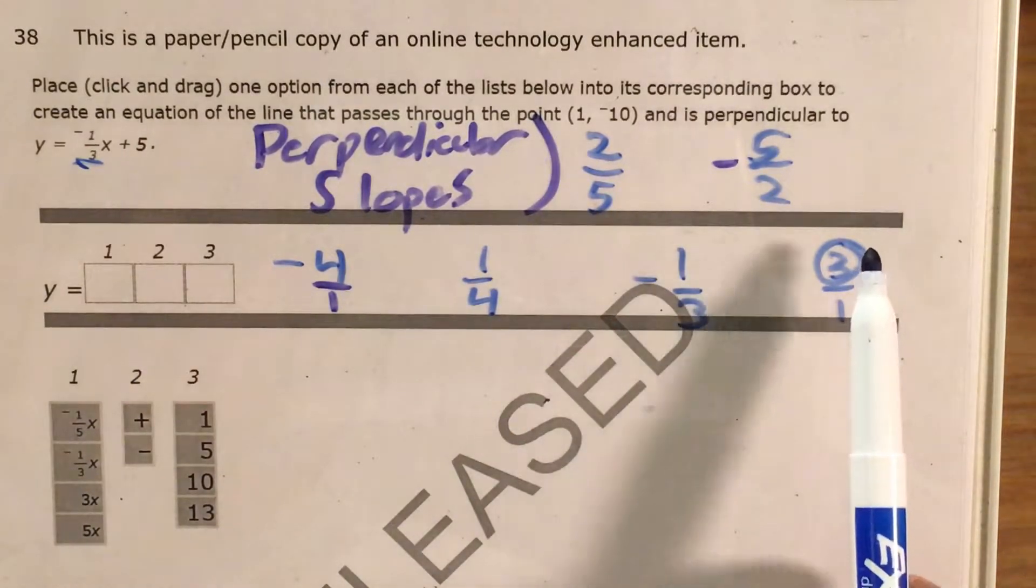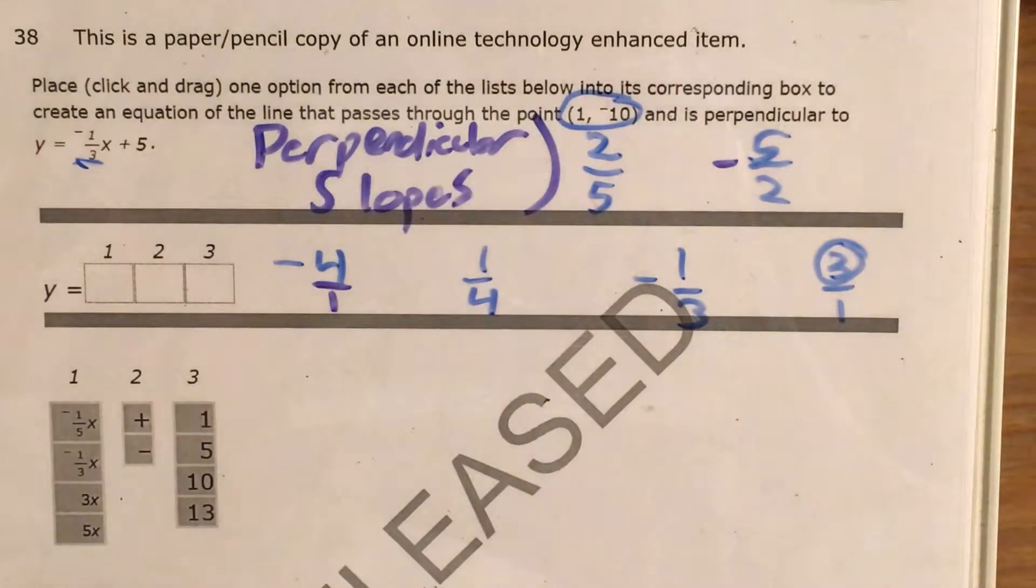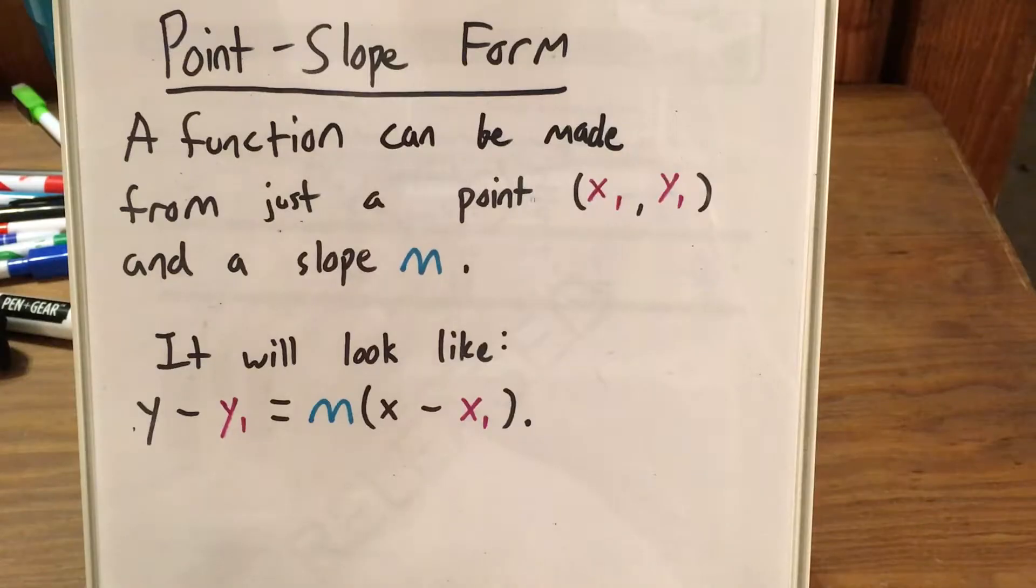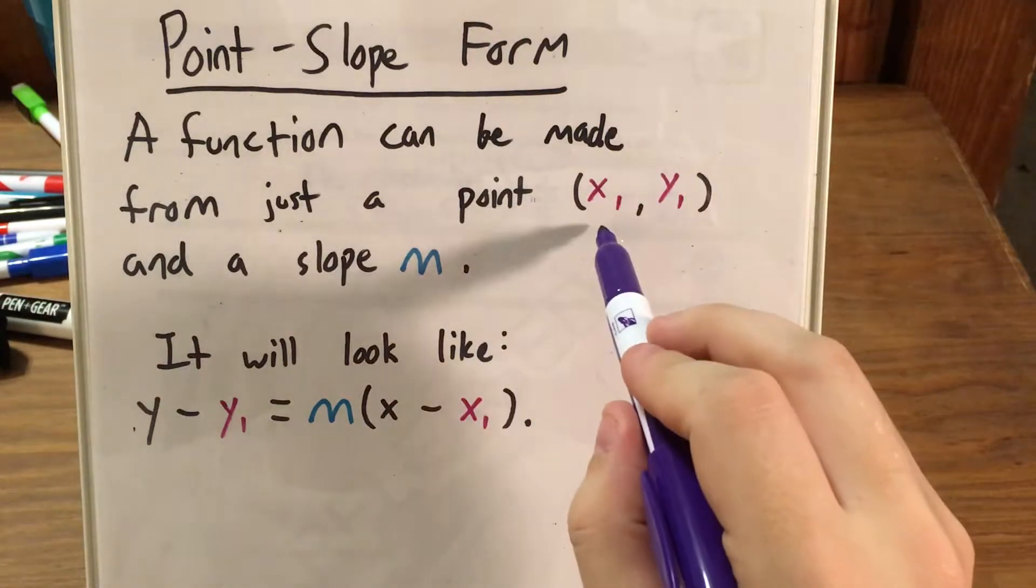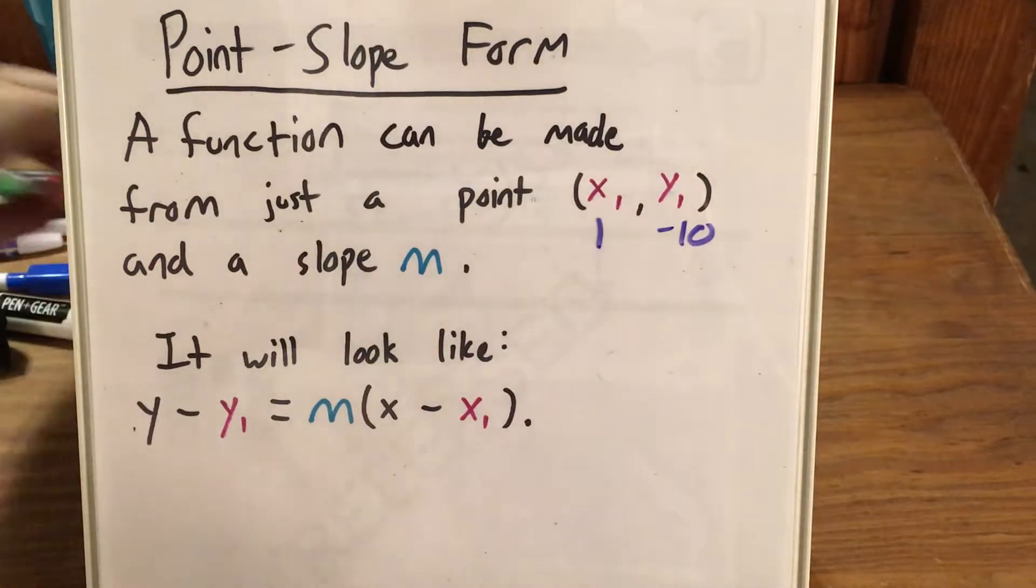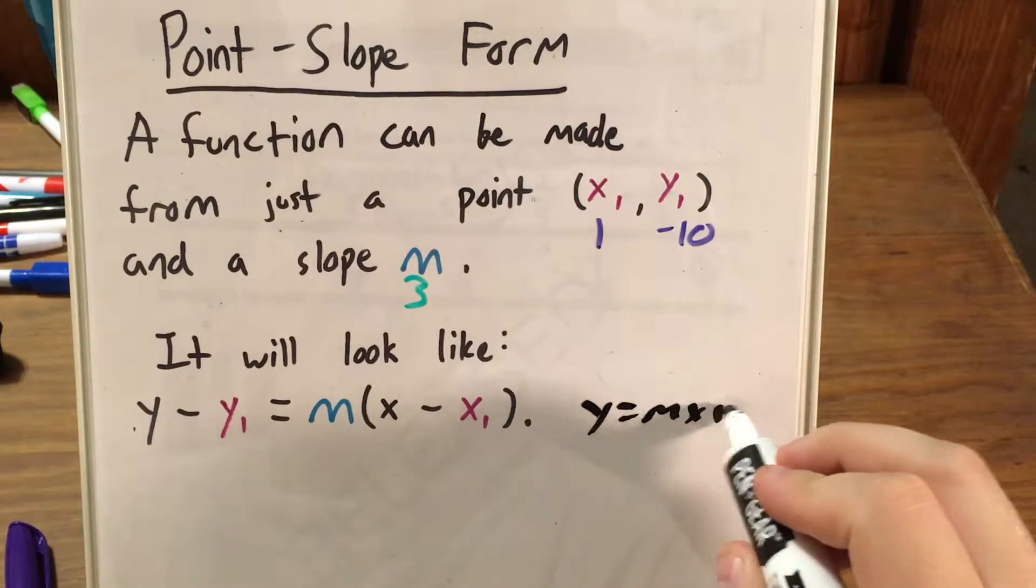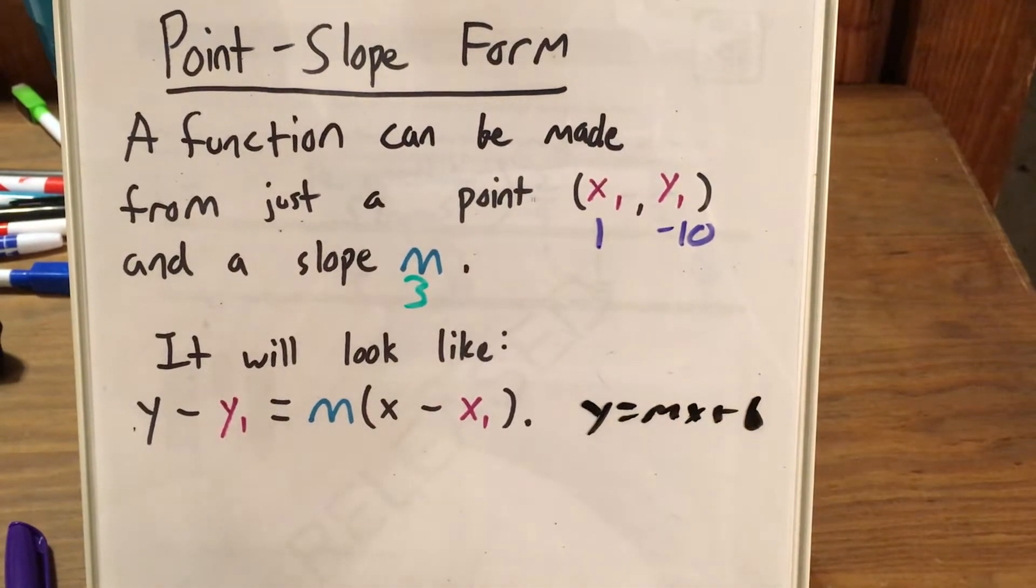So now we need to use this slope of 3 and this point, 1 negative 10, to actually get a function in slope-intercept form, in this y equals mx plus b form. So this is the best way to do this. It's called point-slope form. I've covered it in other questions in the Math 1 released items. Essentially, if we have just a point, like for instance, 1 and negative 10, and a slope, for instance, 3, we can put this information into this formula and play around with it a little bit until we get it into a form that looks like y equals mx plus b, where we just have our slope and our y-intercept.